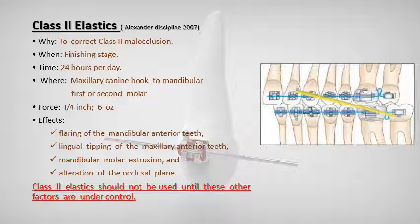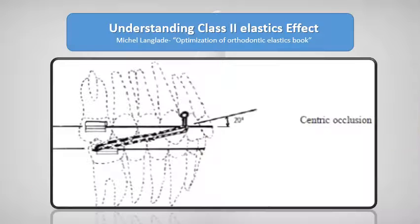Class 2 elastics are used to correct Class 2 malocclusion in the finishing stage, worn 24 hours per day, extending from the maxillary canine hook to the mandibular first or second molar, with a force of quarter-inch, 6 ounces. The effects include flaring of the mandibular anterior teeth, lingual tipping of the maxillary anterior teeth, mandibular molar extrusion, and alteration of the occlusal plane. Class 2 elastics should not be used until these other factors are under control.